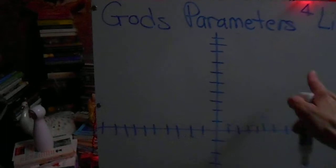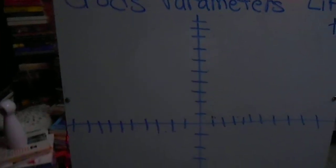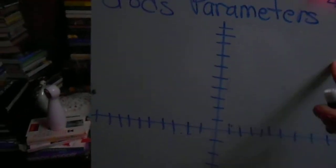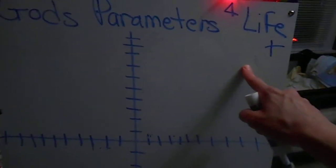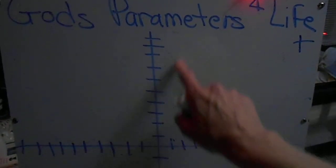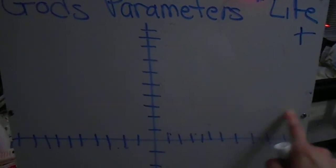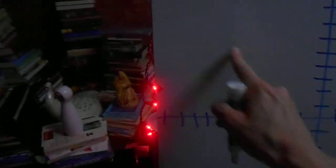You're going to recognize this as a number grid — the positive quadrant, positive 1, 2, 3, 4, 5; positive 1, 2, 3, 4, 5; negative quadrant, negative 1, 2, 3, 4, 5; negative 1, 2, 3, 4, 5 — and these two quadrants here are both positive and negative.